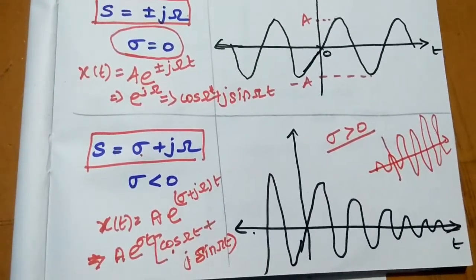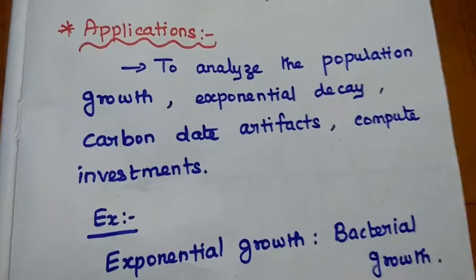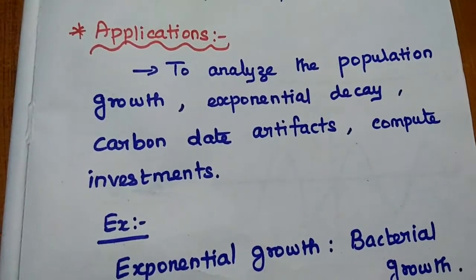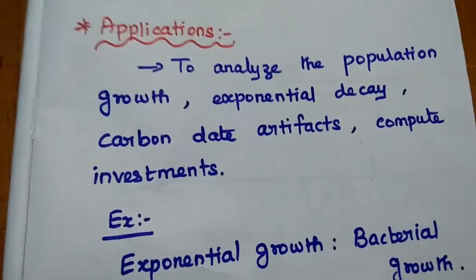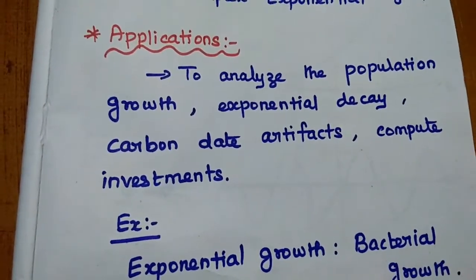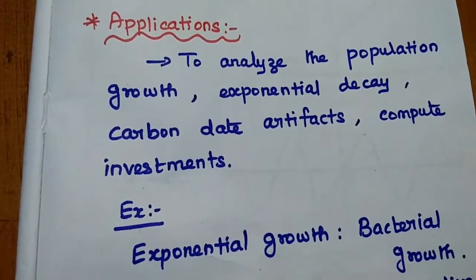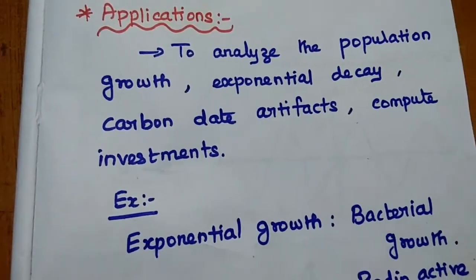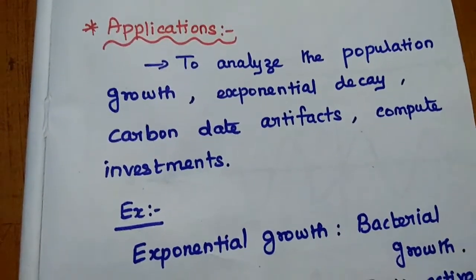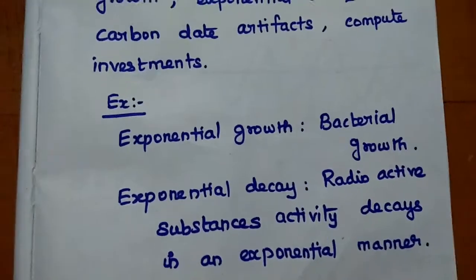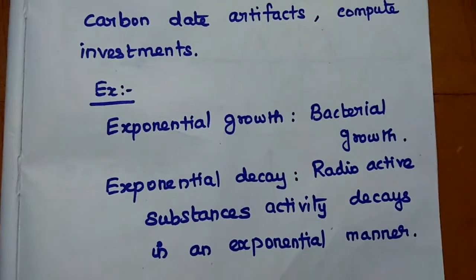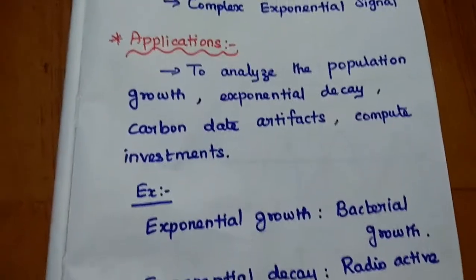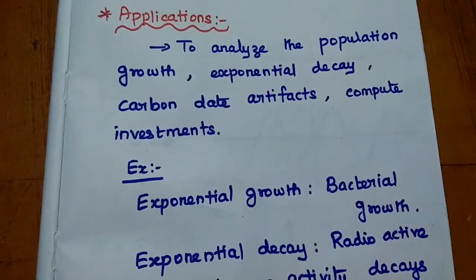These are all the different types of exponential signals. Exponential signals are mainly used to analyze population growth, exponential decay of bacteria, viral phenomena, carbon dating of artifacts in excavation and archaeological studies, and computing investments in trading and banking. Examples include exponential growth of bacteria and exponential decay of radioactive substances, which decay in an exponential manner.